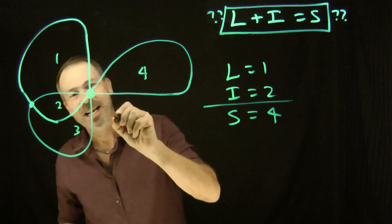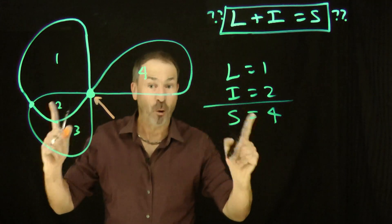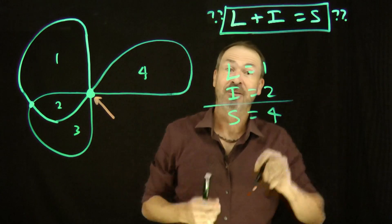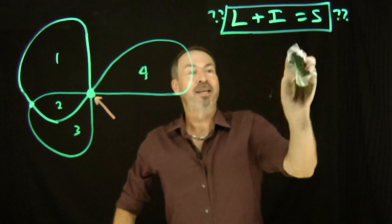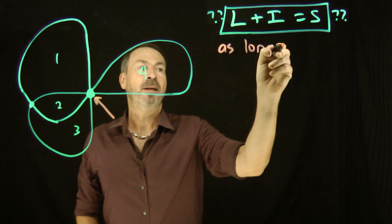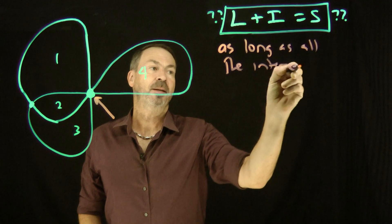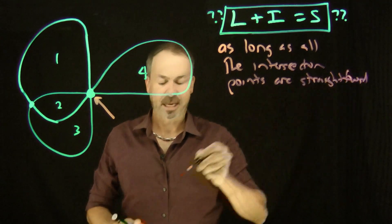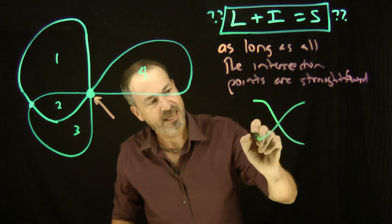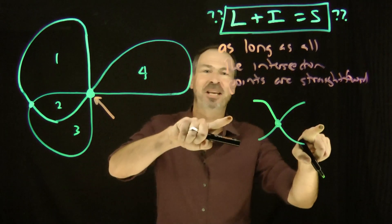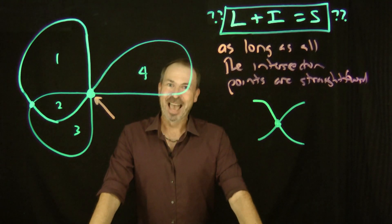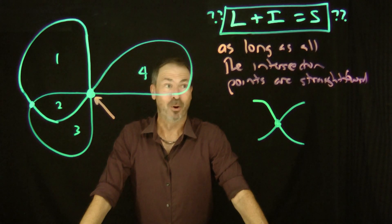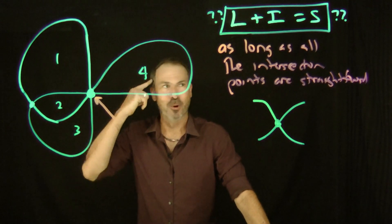I have a feeling the trouble with our theory is these multiple intersection points. So maybe if we avoid multiple intersection points and keep all the intersection points simple — just two lines that go through the same point — maybe our theory is still true. So here's my revised theory: L plus I equals S, as long as all the intersection points are straightforward. That is, one line comes in and another line comes in — only two lines cross at an intersection point. If we've got straightforward intersection points, I have a feeling our theory is true. Let's see if we can now explain why.